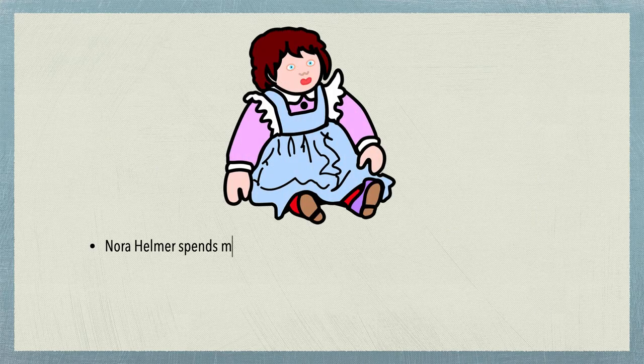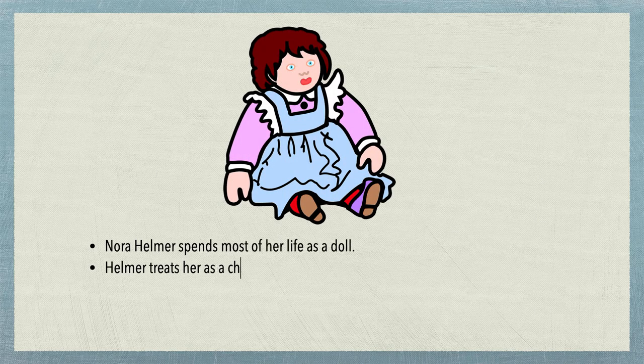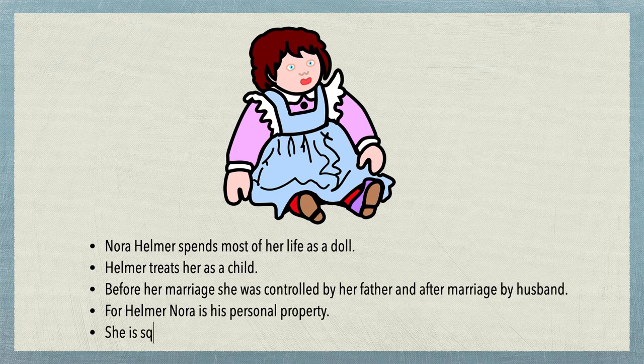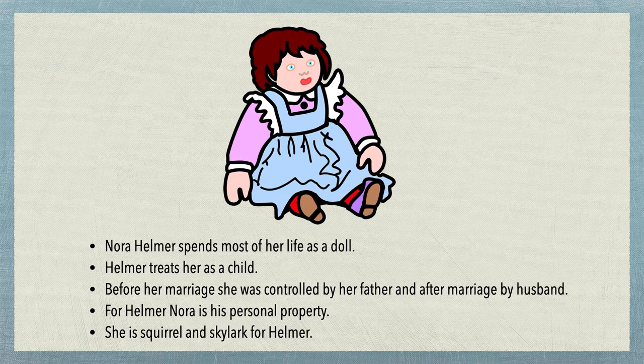Nora Helmer spends most of her life as a doll. Helmer treats her as a child. Before her marriage she was controlled by her father, and after marriage by her husband. For Helmer, Nora is his personal property. She is a squirrel and skylark for Helmer. He does not view Nora as an equal, but rather as a plaything or doll to be teased and admired.